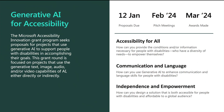Our current grant is the Generative AI for Accessibility grant, and we're looking to receive proposals for projects that use Generative AI to support people with disabilities in accomplishing their goals. This grant round is focused on projects that use generative text, image, audio, and/or video capabilities of AI, either directly or indirectly as part of the overall project solution.